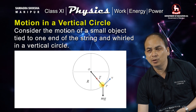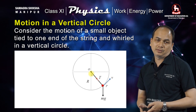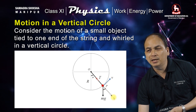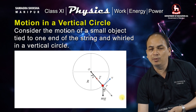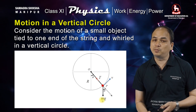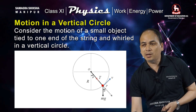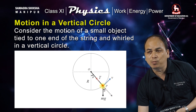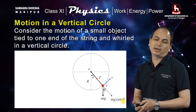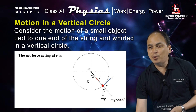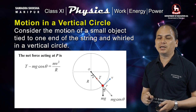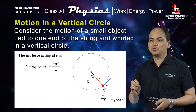The tension in the string acts towards the center of the circular path, and the angle is represented by theta. The weight of the object has one component along this line. So the equation becomes: Tension minus mg·cosθ = mv²/r.